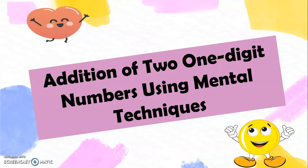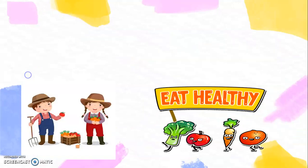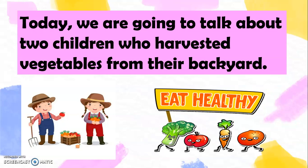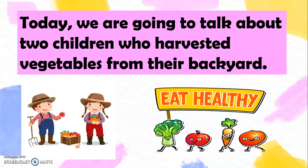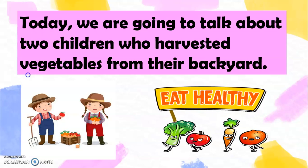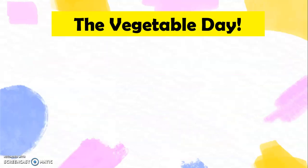Good day, grade 1. Today, we're going to have a lesson that we'll surely have fun with. The title of our lesson for today is Addition of Two One-Digit Numbers Using Mental Techniques. To start, today we're going to talk about two children who harvested vegetables from their backyard. The title of our story is The Vegetable Day.